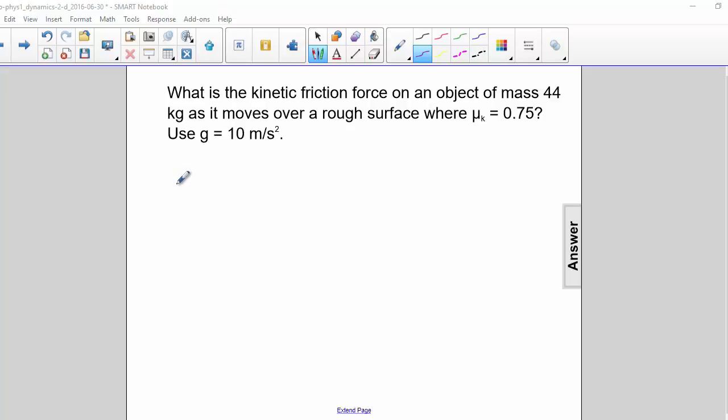What is the kinetic friction force on an object of mass 44 kg as it moves over a rough surface where the coefficient of kinetic friction is 0.75? Use g = 10 m/s².